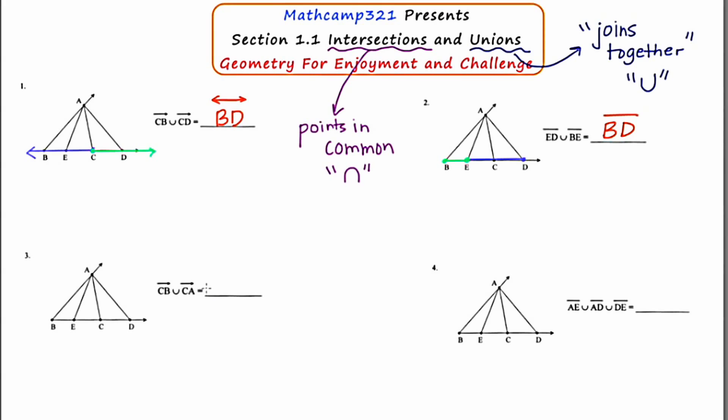In example three, they're asking us another union question. This time they're asking us to unite ray CB and ray CA. When I look at the result of what I have so far, when I unite the blue ray and the green ray together, what I'm getting is an angle. And I know from earlier lessons that to name an angle, I'm going to need three letters and a certain notation. So let me write down the angle symbol. And the middle letter of the three letters has to be the vertex, which is C. So I can call this angle ACB, or I could call this angle BCA or ACE or ECA. I'm going to go ahead and just name it angle BCA.